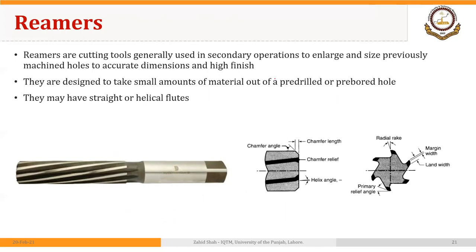Another very commonly used tool on a drilling machine is the reamer. These are cutting tools generally used in secondary operations to enlarge and size previously machined holes to accurate dimensions and high finish. Not only do we achieve higher finish, but we slightly increase the diameter of the hole as well. They are designed to take small amounts of material out of a pre-drilled or pre-bored hole. They have straight or helical flutes. Here you can see the flutes on a reamer.